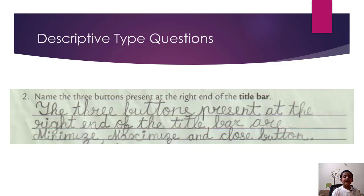Second, name the three buttons present at the right end of the title bar. So the answer is the three buttons present at the right end of the title bar are minimize, maximize and close button.